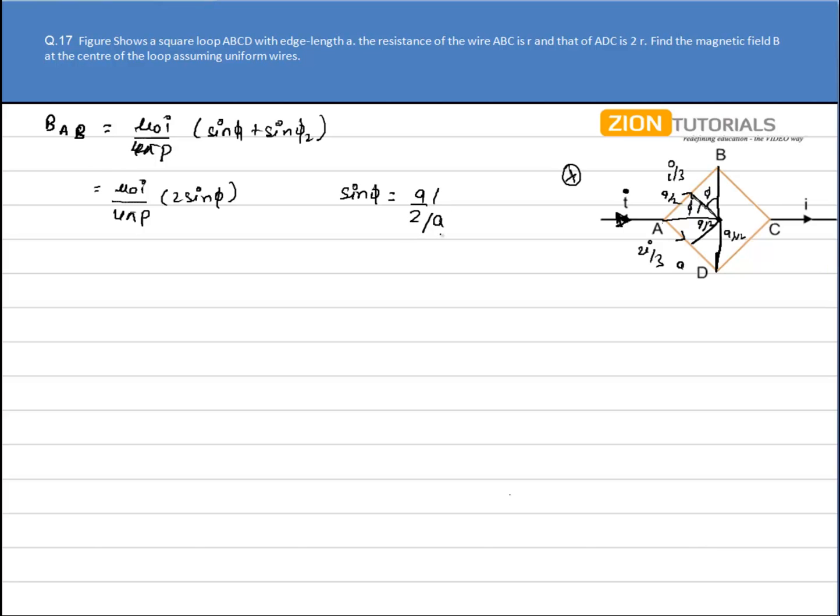That is 45 degrees, so phi is equal to 45 degrees.